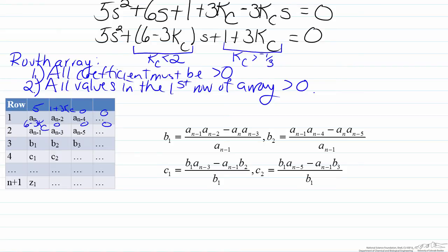So as we look at our variables we see the fact that for b1 we have that an minus 1 is 6 minus 3Kc, which will be both in the numerator and the denominator. an minus 2 is 1 plus 3Kc. an is 5,